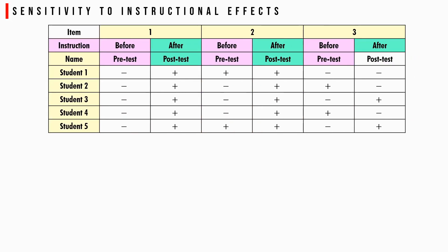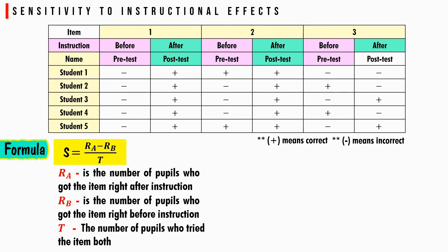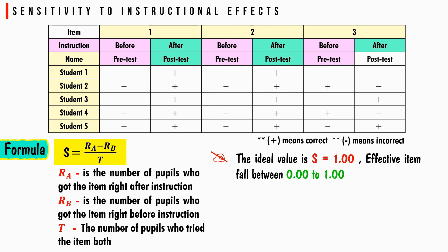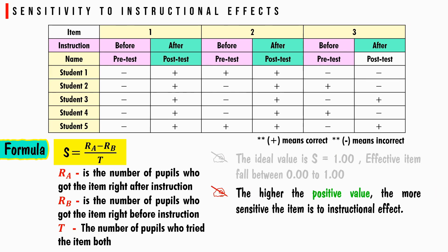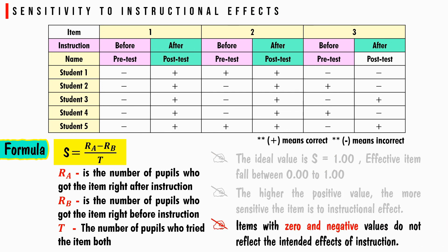Sensitivity to instructional effects measures the effectiveness of instructional material. A table shows three items from an achievement test answered by five students before and after instruction, where plus means correct and minus means incorrect. The formula is: S = (Ra − Rb) / T, where Ra is the number who got the item right after instruction, Rb is the number who got it right before instruction, and T is the number who tried the item both times. The ideal value is S = 1. Effective items fall between 0 and 1; the higher the positive value, the more sensitive the item is to instructional effects. Items with 0 or negative values do not reflect the intended effect of instruction.